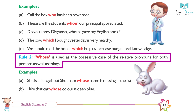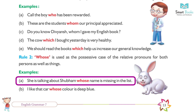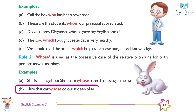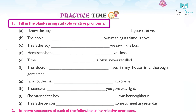Rule 2: Whose is used as the possessive case of the relative pronoun for both persons as well as things. Examples: (a) She is talking about Shubham, whose name is missing in the list. (b) I like that car whose color is deep blue. Practice time — fill in the blanks with suitable relative pronouns.